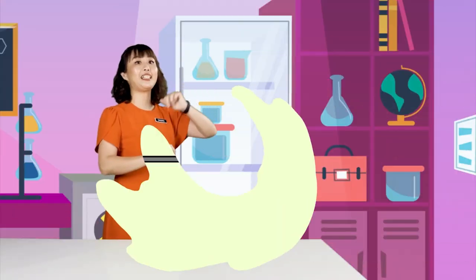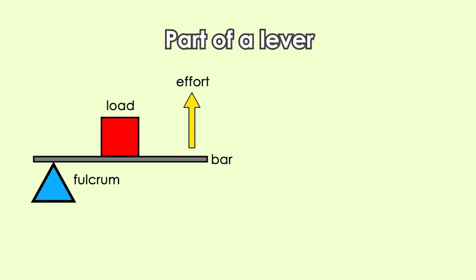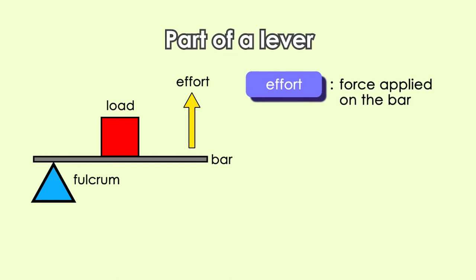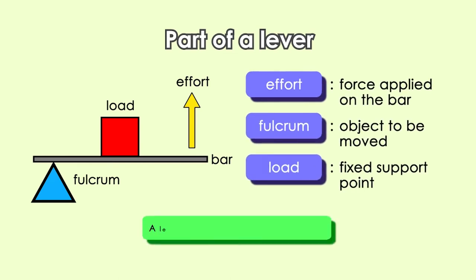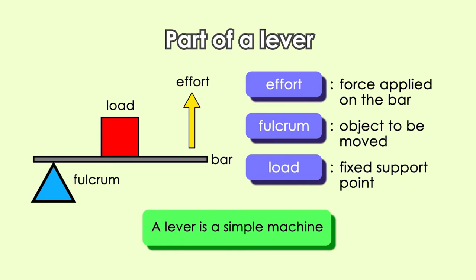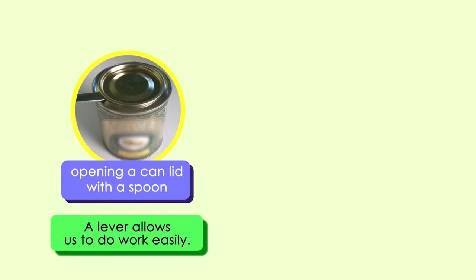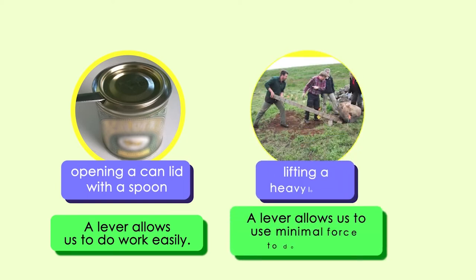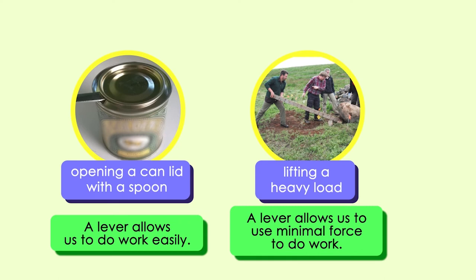Now, let us discuss levers. This is a lever. In this diagram, you can see the parts of the lever. The parts of the lever include the effort, fulcrum, and load. The lever is a simple machine. It can allow us to do work easily, and it can also allow us to use minimal force to do work.